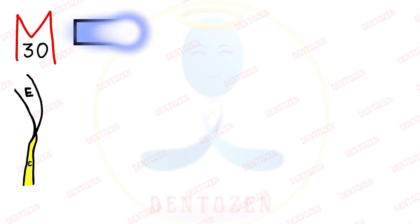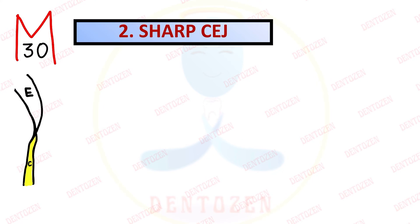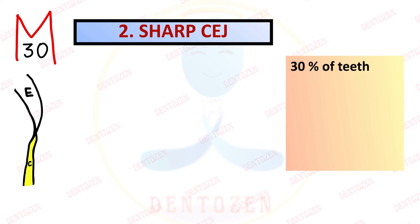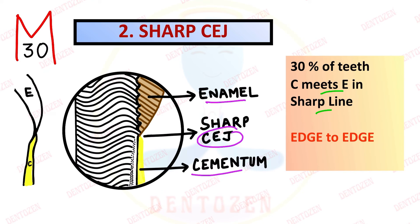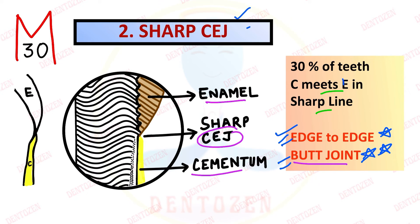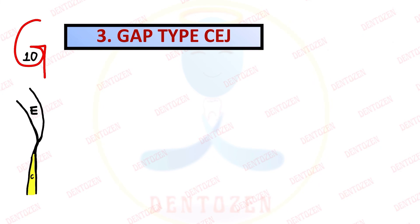The second type is edge-to-edge, where cementum and enamel meet at a sharp line. It is seen in 30% of teeth. In the diagram, everything else remains the same but the cementoenamel junction is edge-to-edge. This type is also known as butt joint - that can be a viva or entrance exam question. A sharp junction is also called edge-to-edge junction or butt joint.